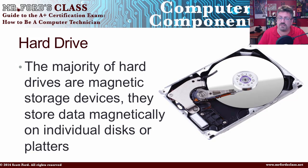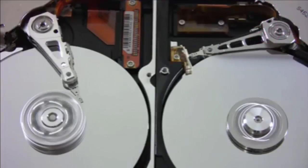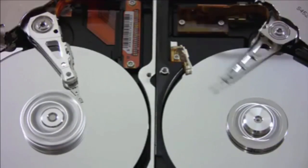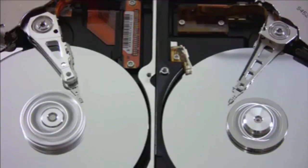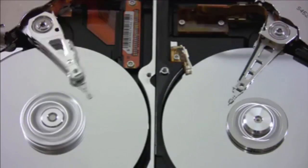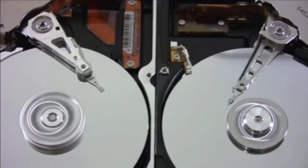The majority of hard drives are magnetic storage devices. They store data magnetically on individual disks or platters, and you can see that you have reading and writing to a disk. The platters are made of aluminum or glass and coated with a magnetic medium. Now, here is a warning for hard drives.